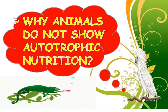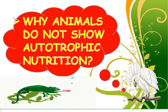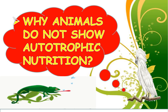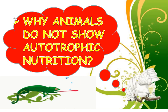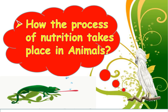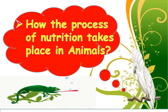Can you tell me now why animals do not prepare their food themselves by the process of photosynthesis? Because animals do not have chlorophyll to carry out photosynthesis. So how does the process of heterotrophic nutrition take place in animals?